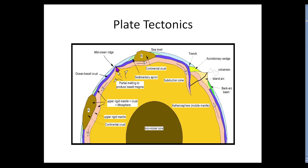This is a zero sum game — if you're subducting something someplace, you need to replenish it elsewhere. That's why wherever there's a trench you generally have a mid-ocean spreading ridge where new ocean crust is being created. The lithosphere and crust begin to melt and build island arcs. As the arc builds and subducts, sediments get scraped off creating an accretionary wedge, and you also get a back arc basin as the plate pulls downward.